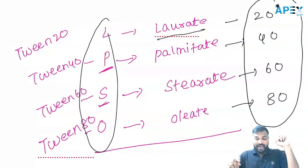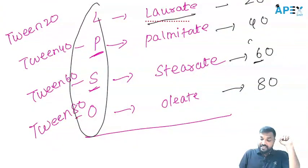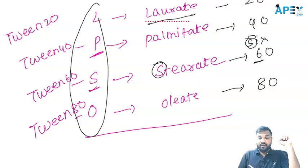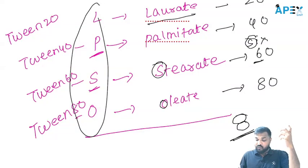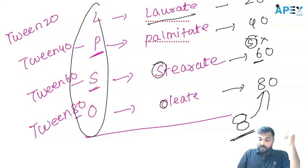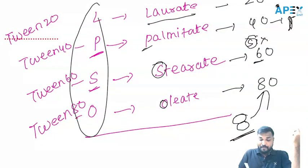Still, if you have any doubt, you can remember it like this also: S is stearate at 60; O — oleate — you can write 2 times O, that is 80, oleate. And 40 F becomes P — palmitate. Just keep it like that.